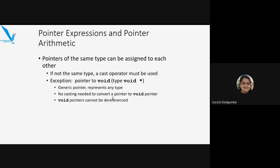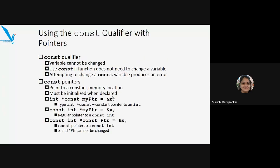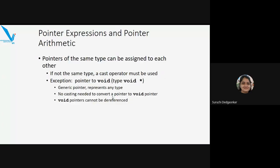What is a void pointer? A void pointer is a generic pointer that can be typecasted to any type. It can be converted to an integer pointer, float pointer, or any type of pointer. Before using a void pointer, you must typecast it first — assign a type to it — and then you can use it afterwards.